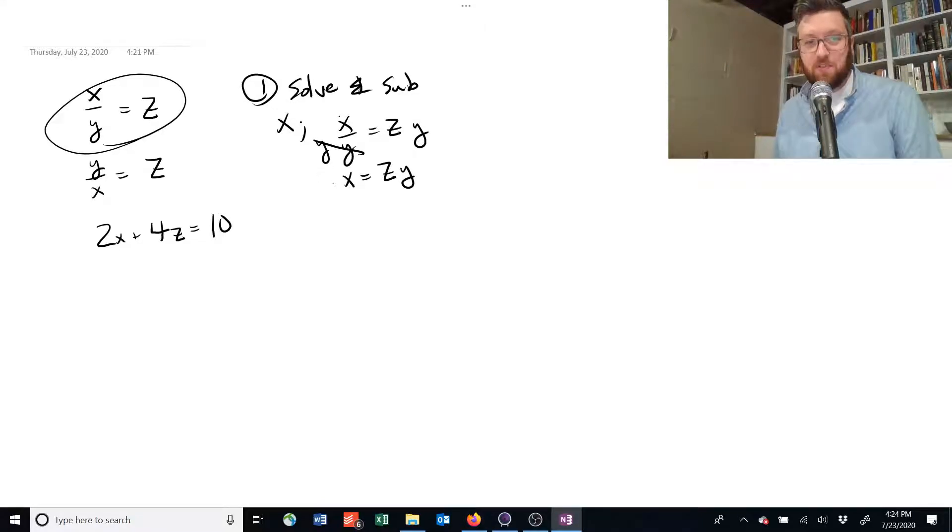Now we're going to substitute this into one of our equations and see if that tells us anything useful. So we've got y over x is equal to z, and we know that x is equal to z times y, so we've got y over z times y is equal to z. And this is actually surprisingly useful. So we know that these y's cancel out, and we end up with 1 over z is equal to z.